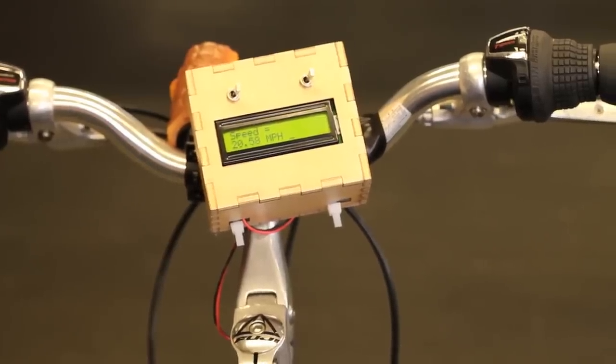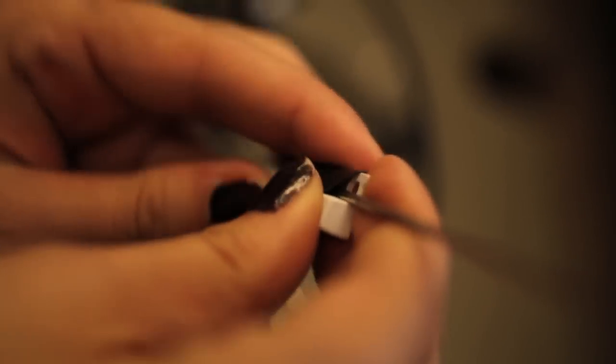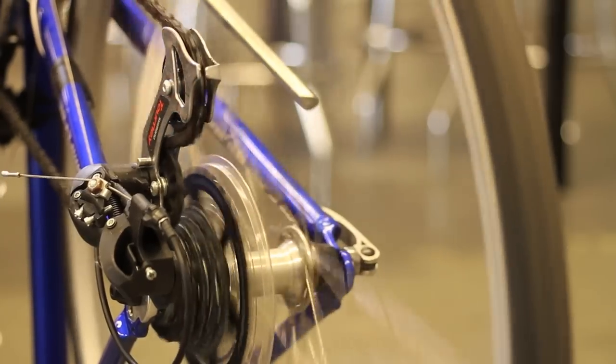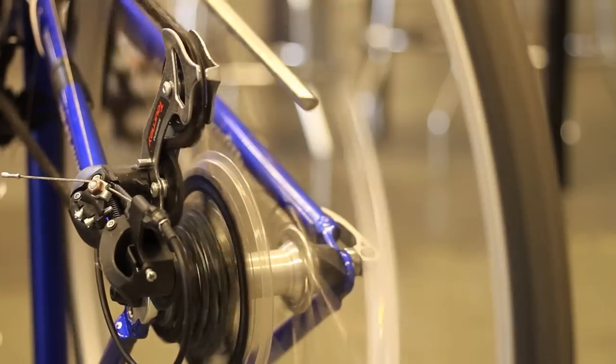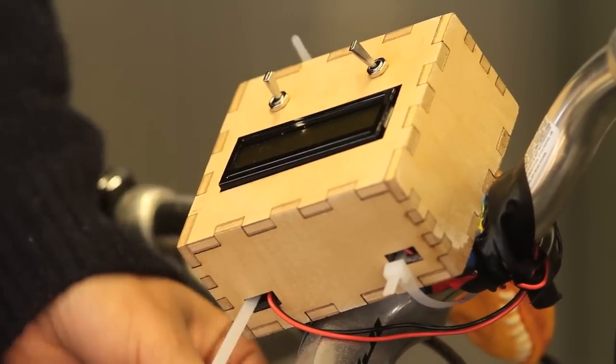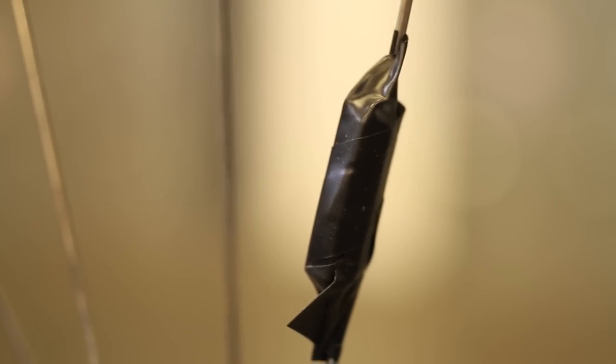I attached a magnet to one of the spokes of the rear wheel of the bike and I also attached a magnetic switch to the bike frame near where the magnet was passing by. Each time the magnet passes near the switch, it sends a pulse signal back to the Arduino.